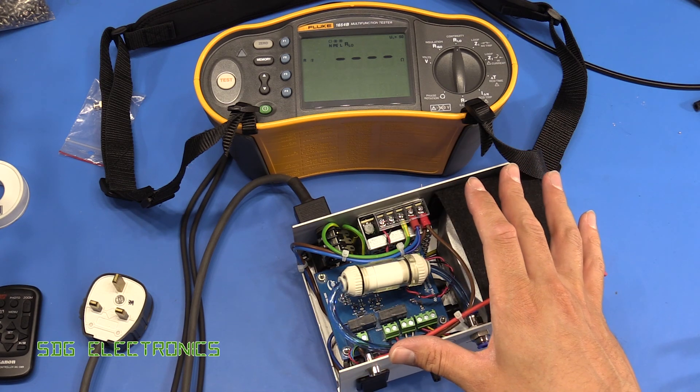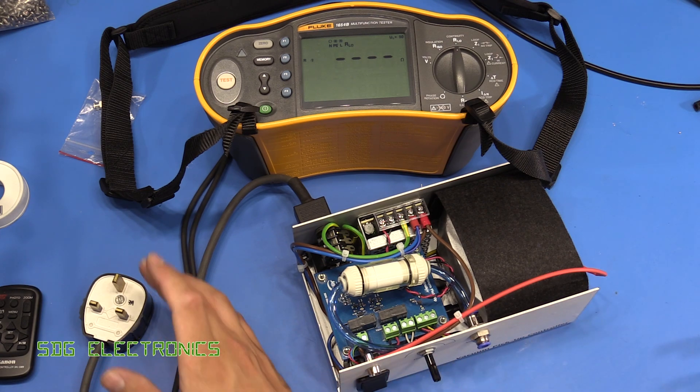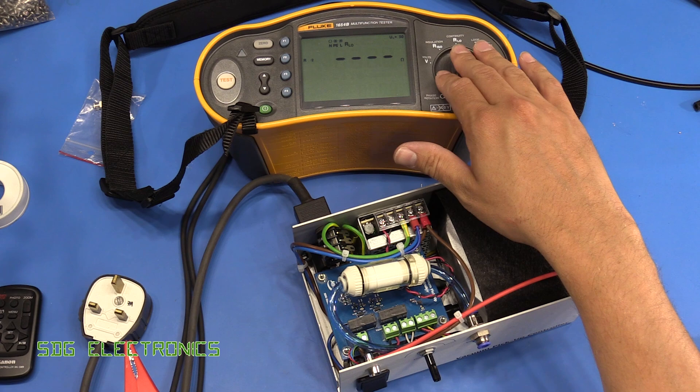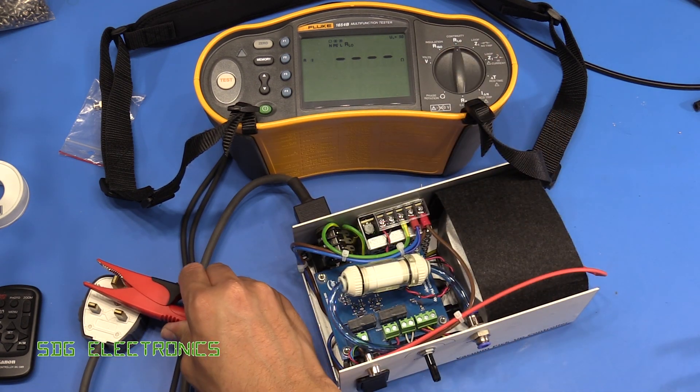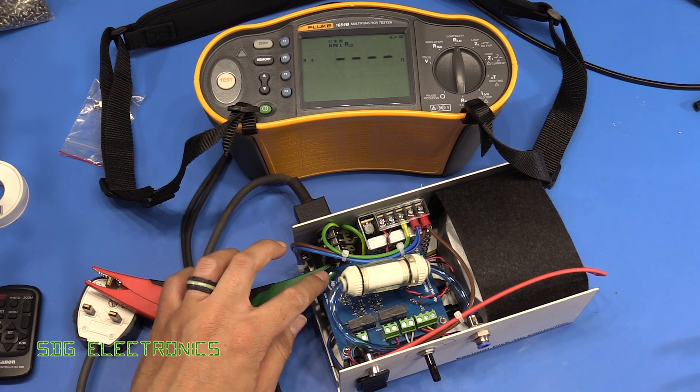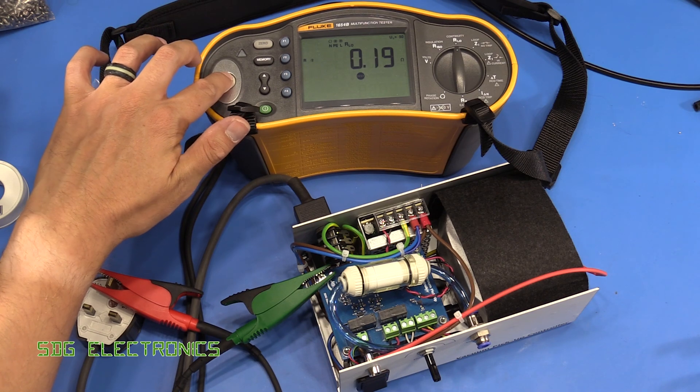Right, so just to make sure that this is safe, the first thing that we want to do is make sure that the chassis of the device is properly connected to the mains earth pin on the plug. So we've set the Fluke Multifunction Tester to continuity and we'll put one probe on the earth pin and one on the PCB mount because that's connected to the chassis. And there you go, you can see we get a reasonably low reading for continuity there.